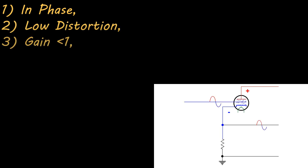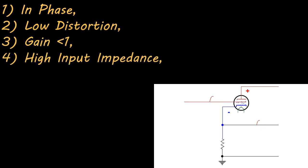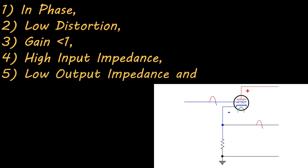So in no particular order, the properties are the output and input signals are always in phase. There is very little distortion in the signal because of the negative feedback. The gain of the amplifier is always less than 1. It has high input impedance, low output impedance, and an extremely wide frequency response, all the way from DC up to 5 megacycles.